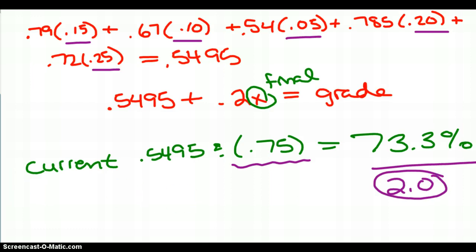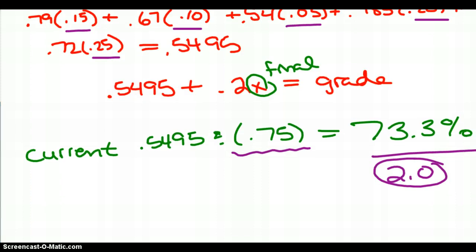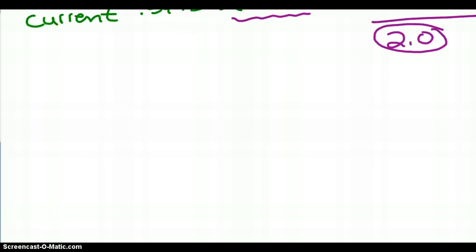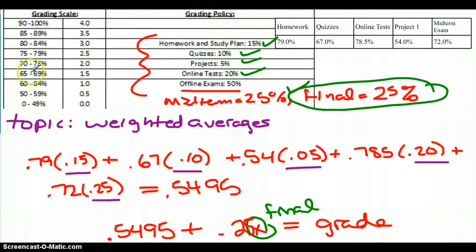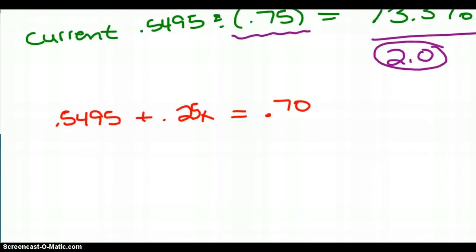So the next kind of question that I would like to answer is, what score does this student need to get on their final to keep a 2.0? So this is where this right here comes back in. If they've got a .5495, I want to know what that x is going to be so that when I multiply my final exam grade added on to my current grade without it is going to equal what I need for that final. And what I need for a 2.0 for the course overall is a minimum of 70%. So I'm going to set that equal to 70% and solve for my x.